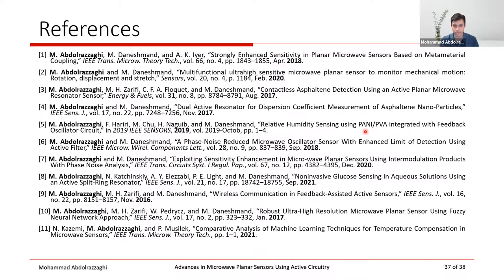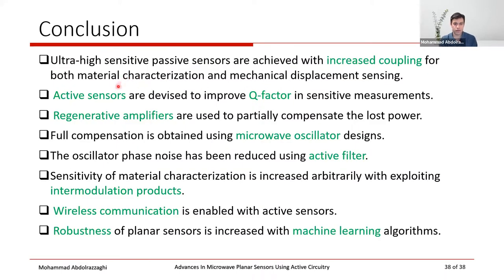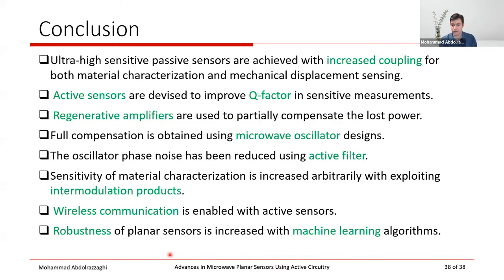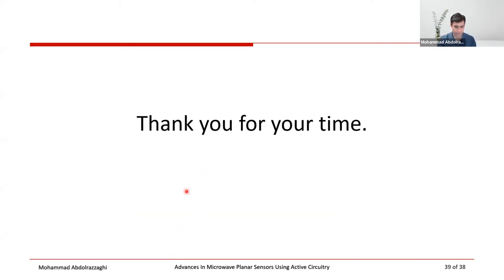In conclusion: ultra-high-sensitivity passive sensors are achieved by increasing coupling for both material characterization and mechanical displacement sensing. Active sensors improve quality factor in sensitive applications; regenerative amplifiers partially compensate lost power, and full compensation uses microwave oscillator designs. Oscillator phase noise is reduced using an active filter. Sensitivity is increased arbitrarily by exploiting intermodulation products. Wireless communication is enabled with active sensors, and robustness of planar sensors is increased with machine learning algorithms. Thank you for your time.